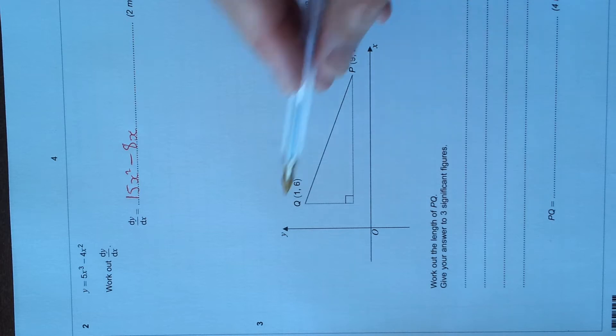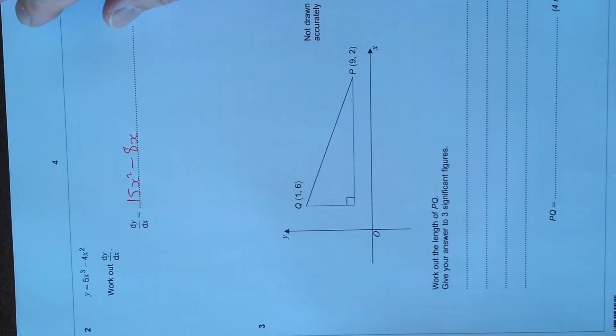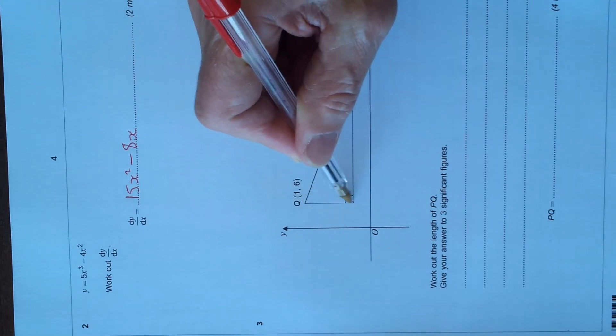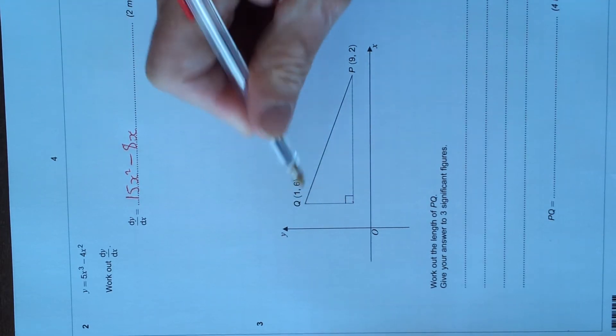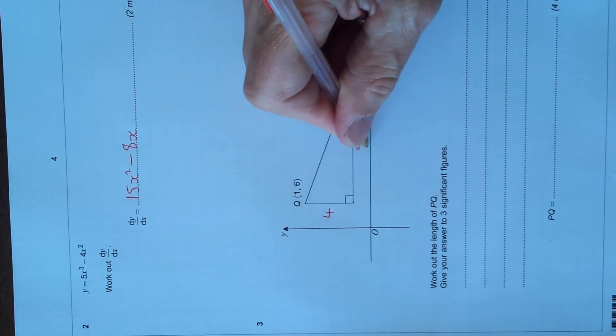Question 3 asks us to work out the length of PQ. So this is Pythagoras, because there's no angles involved. Let's find the difference in the y values. 6 to 2 is a difference of 4, and 1 to 9 is a difference of 8.